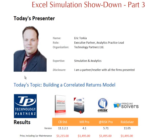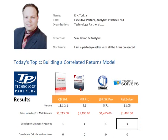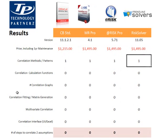Our topic today will be how to build a correlated returns model with our usual suspects: Oracle Crystal Ball 11.1.2.1, Model Risk Professional version 4.1, At Risk Professional version 5.71, and Frontline Solvers 11.05.